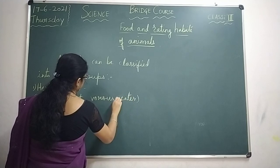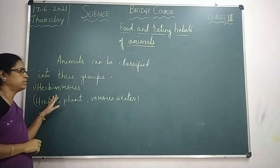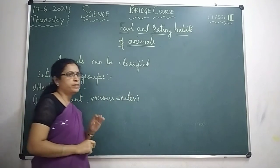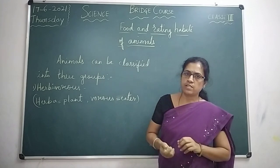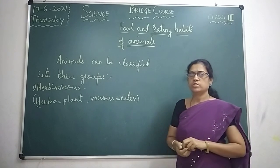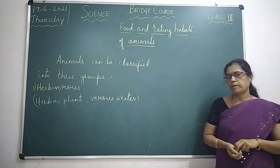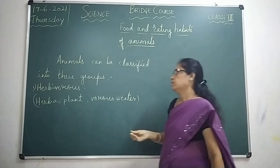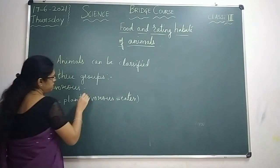So what are herbivores? Herbivores are animals such as cow, sheep, buffalo, camel, goat. So those are examples of herbivores.